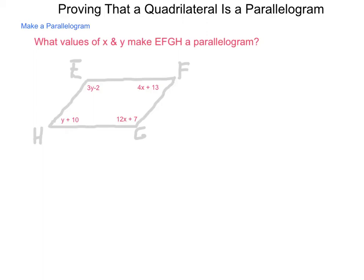Let's begin with solving for Y. So we have 3Y minus 2 plus Y plus 10 has to equal 180 degrees. Now combining like terms, we will have 4Y plus 8 equals 180. Using our subtraction property of equality, we have 4Y equals 172. Dividing by 4, Y is going to equal 43.